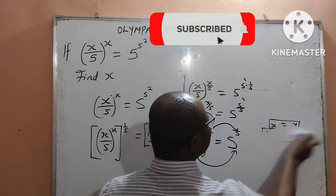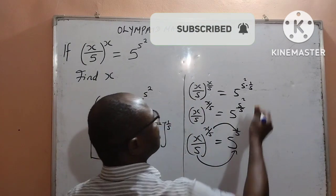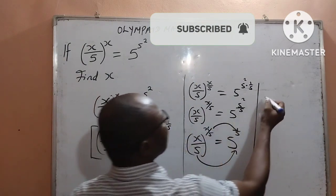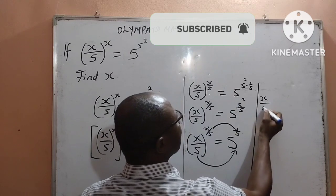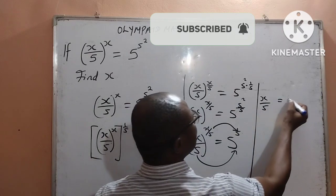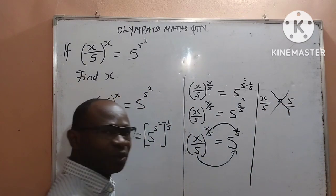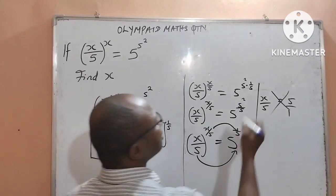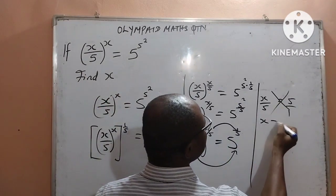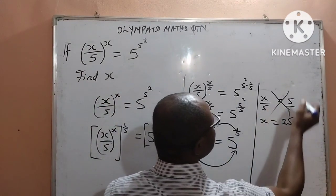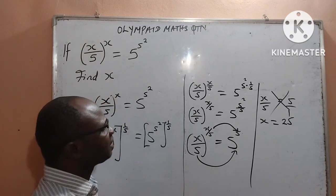In conclusion, we can now write and say that x all over 5 is equal to 5. And we can now cross-multiply to have our x equal to 25. Final answer.